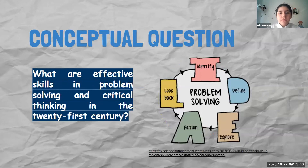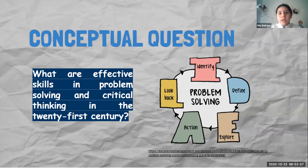Conceptual question: what are effective skills in problem solving and critical thinking in the 21st century? The effective skills that are crucial for problem solving and critical thinking are creativity, since it is really helpful in order to create solutions in problem solving as well as ideas in critical thinking.